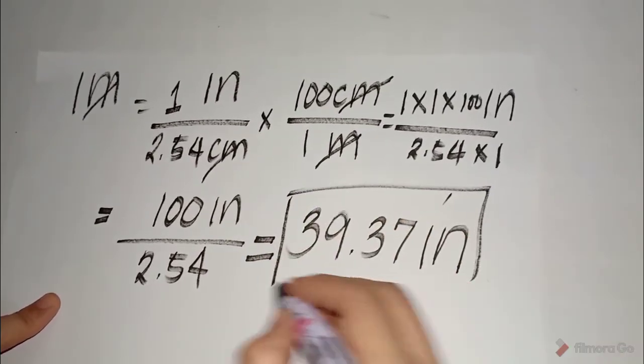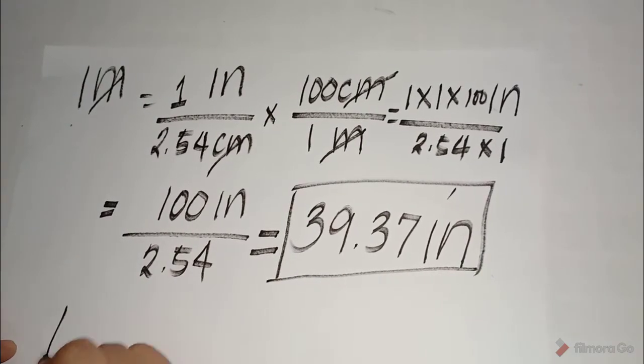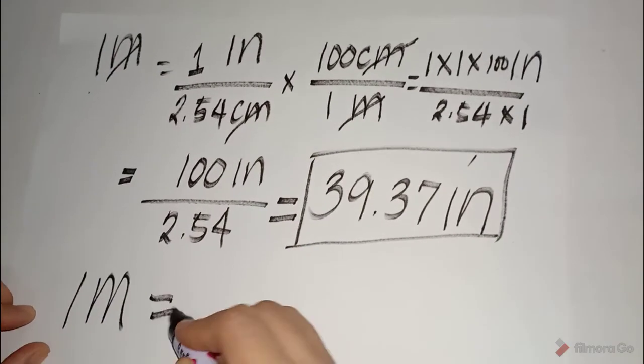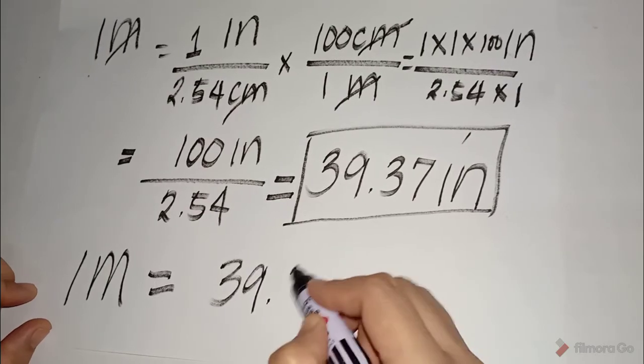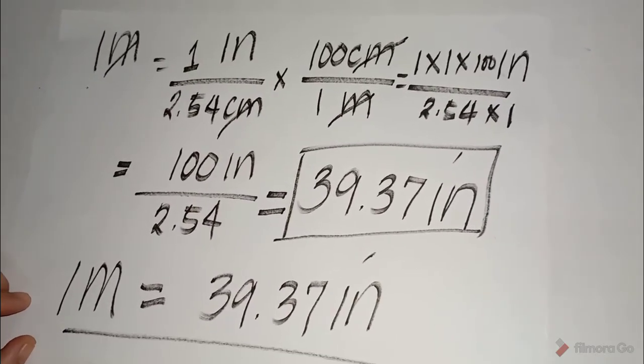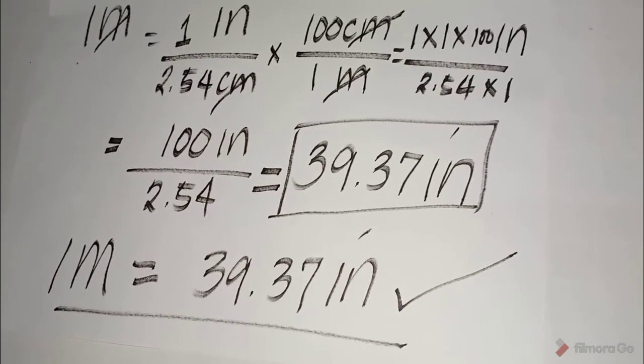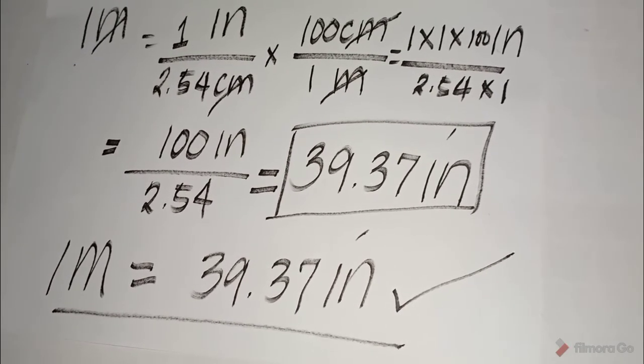So, this is our final answer. 1 meter is equivalent to 39.37 inches. Okay, so till next time guys.